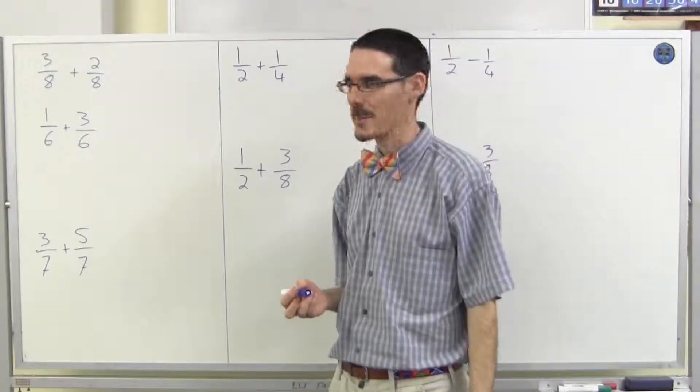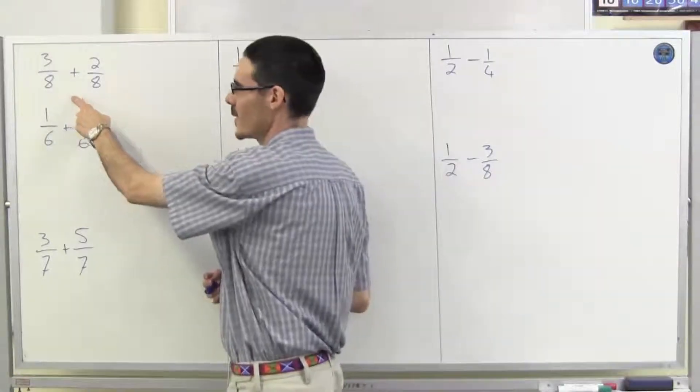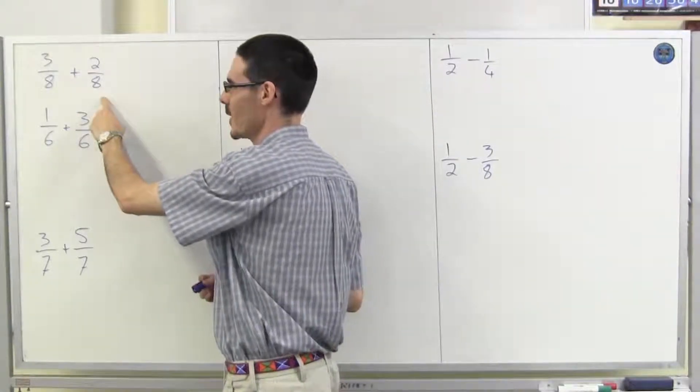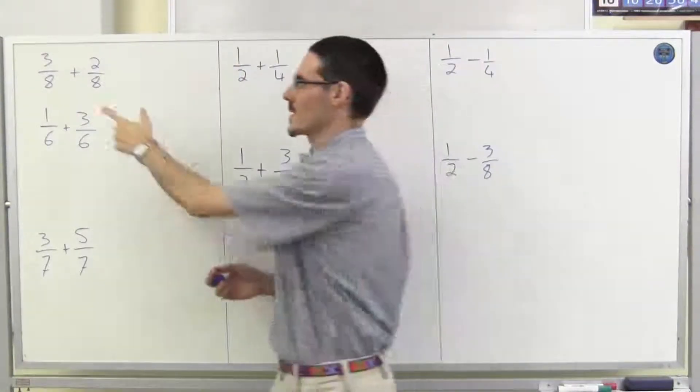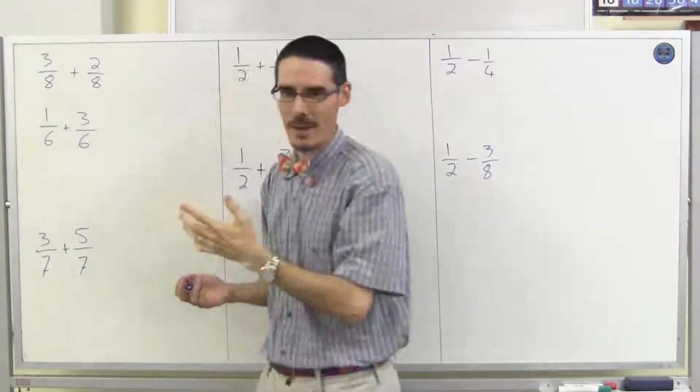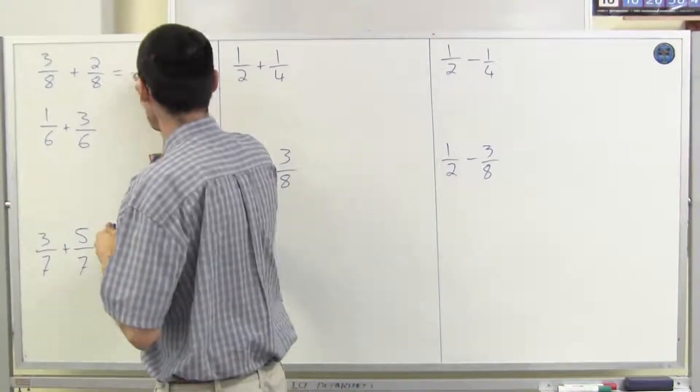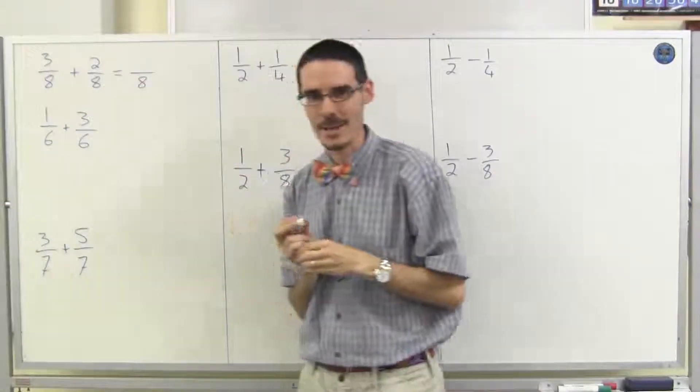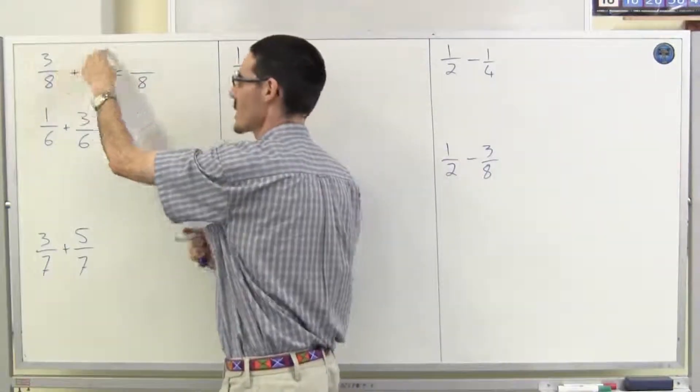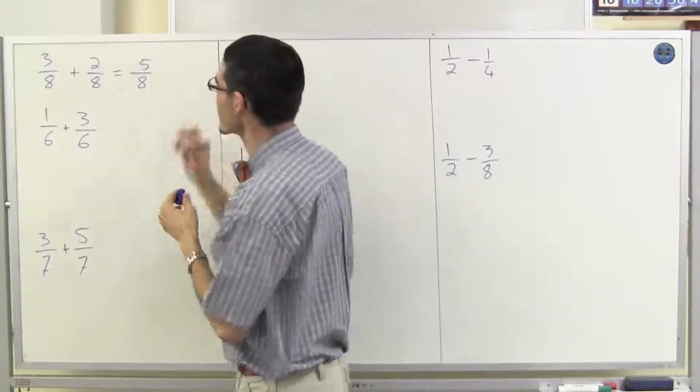So here's a couple of simple examples. Three-eighths plus two-eighths. Well, they've both got the same denominator, so all I have to do is just add the numerators. The denominators are the same. My answer is going to be an eighths. Three plus two makes five-eighths.